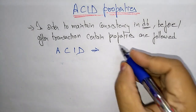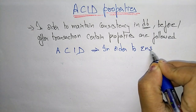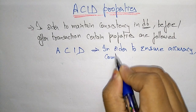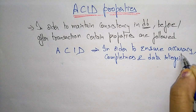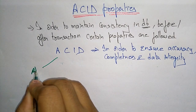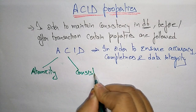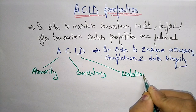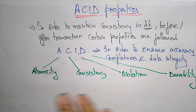The main use of ACID properties is to ensure accuracy, completeness, and data integrity. Here, A means Atomicity, C means Consistency, I means Isolation, and D means Durability. These are the different properties used while performing transactions.